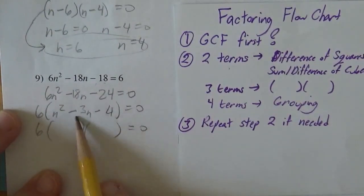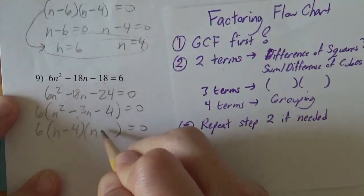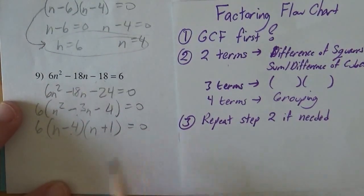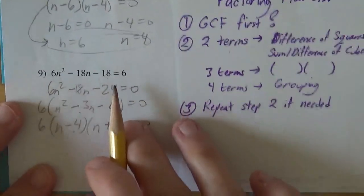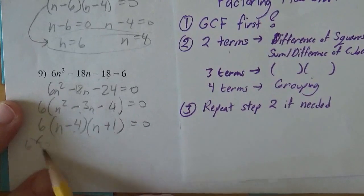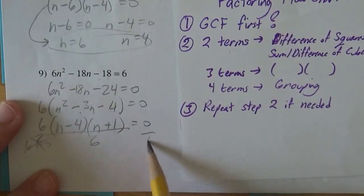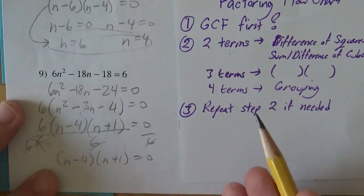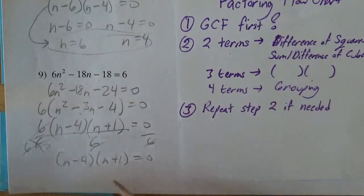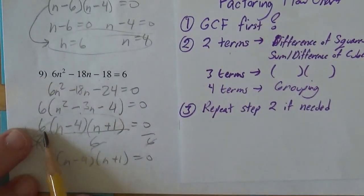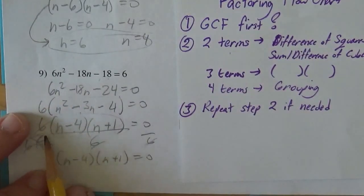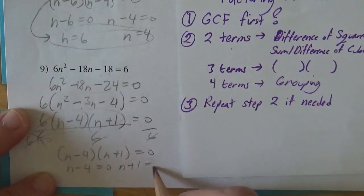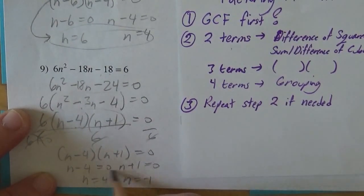I need to multiply to make negative four and add to negative three. So, a negative four and a positive one multiplied make negative four, add to negative three. And so this times that times that equals zero, so one of these factors needs to equal zero. Well, the six won't ever equal zero, so I'm not getting anything from that factor. Some students will just divide both sides by six and let it go away. So either n minus four would equal zero or n plus one would equal zero, so n will equal four or n will equal negative one.